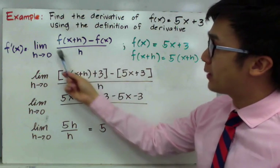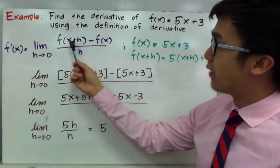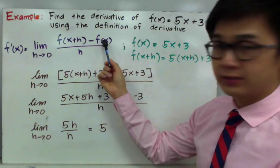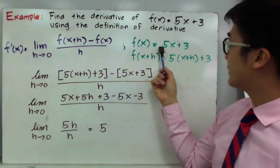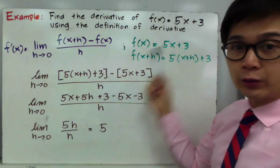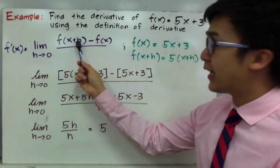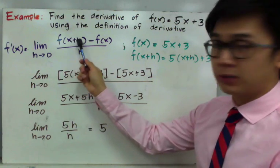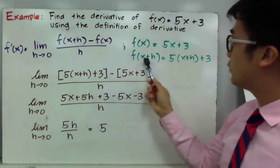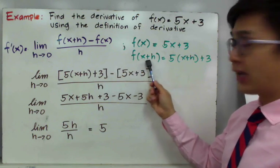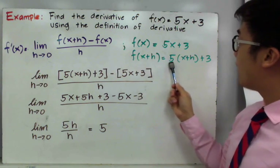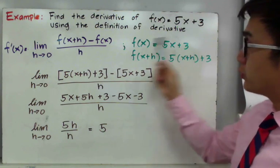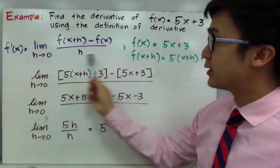Before we use this formula, let's first define what f of x plus h is, and of course the function f of x. We know f of x is the given function, so f of x equals 5x plus 3, which is our original function. f of x plus h means we replace all the variable x with x plus h, so f of x plus h becomes 5 times the quantity x plus h, plus 3.